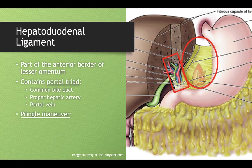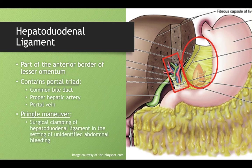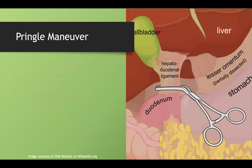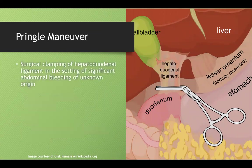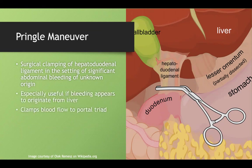One important clinical consideration is the Pringle maneuver, where we clamp down on the hepatoduodenal ligament, which also clamps the portal triad. This is used if we see bleeding around the liver but don't know exactly what's causing it. Clamping blocks blood flow through the common bile duct, proper hepatic artery, and portal vein.